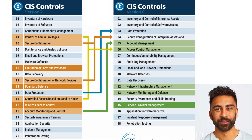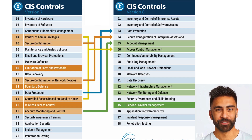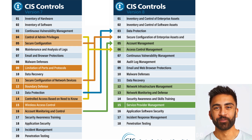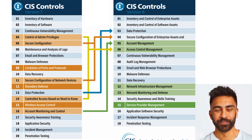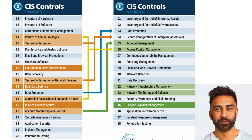The CIS Controls are prioritized based on their effectiveness in preventing cyber attacks, making them an excellent starting point for organizations new to cybersecurity. The controls are designed to be straightforward and practical, ensuring that even organizations with limited resources can implement them effectively. CIS also offers various resources and tools, such as the CIS Controls Self-Assessment Tool, CSAT, and the CIS Controls Implementation Guide. By following the CIS Controls, organizations can establish a strong foundation for their cybersecurity efforts and progressively build more sophisticated defenses as they grow and mature.